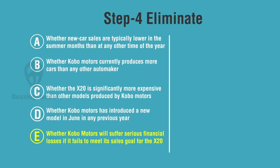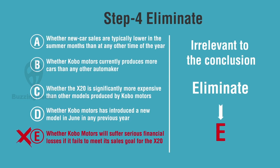Step 4. Eliminate. In GMAT, let's always eliminate from option E. That would help us not to get trapped from some of the tricks played by the GMAT. Option E. Doesn't matter if Kobo will suffer serious financial losses. Irrelevant to the conclusion. We can eliminate this one.